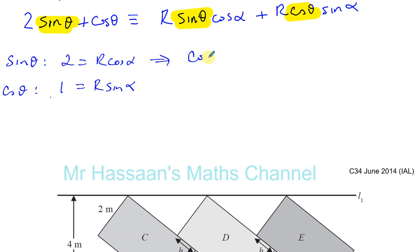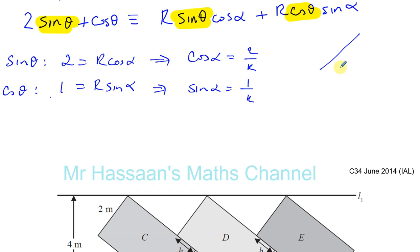So if you think about it, you can make a right-angled triangle. Alpha is in a right-angled triangle. Cosine of alpha is 2 over R, so R is the hypotenuse and 2 is the adjacent. Sine alpha is 1 over R. So we can find R by using Pythagoras: R equals the square root of 1 squared plus 2 squared, which is 4 plus 1, so R equals root 5.